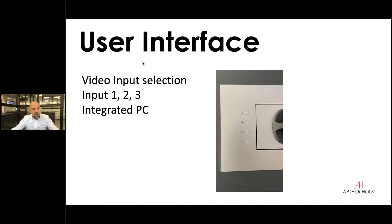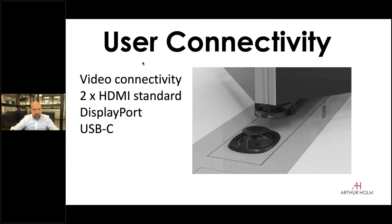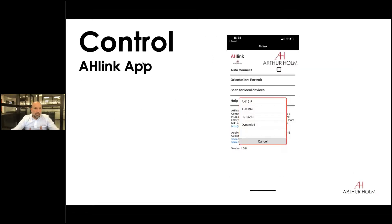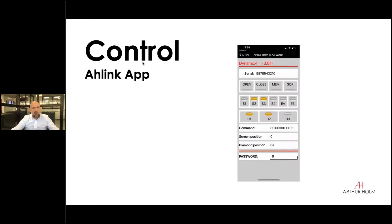The integrated PC comes with Windows already installed, and the idea is that you connect to your server or you download your favorite communication platform or the program that you need. The control, as I said, we have the physical control on top of the product, but we also have the AH Link. The AH Link is based on an app, both for Android and iOS, and it gives you access to the product where you can raise it up, turn it around and do your different settings. Apps become a bigger part of the professional AV industry as well. There will be some more features coming with this where you also can select inputs and so on.